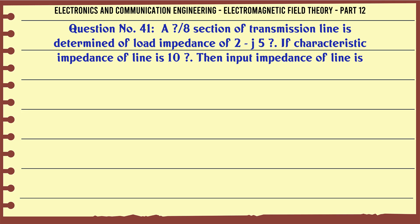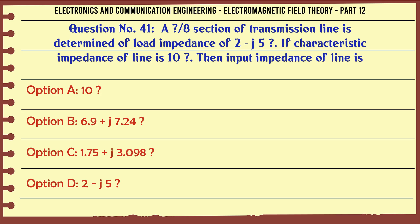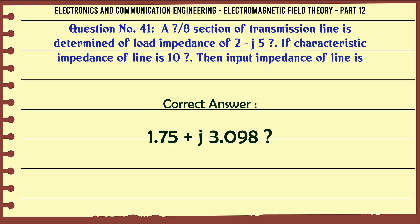A λ/8 section of transmission line is terminated by a load impedance of (2 + j5) ohms. If the characteristic impedance of the line is 10 ohms, then the input impedance of the line is: A. 10, B. 6.9 + j7.24, C. 1.75 + j3.098, D. 2 + j5. The correct answer is 1.75 + j3.098.